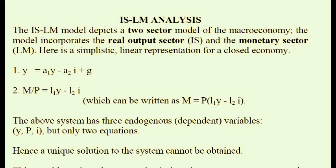The real output sector is usually represented by the national income accounting identity: Y equals C plus I plus G. This says that output produced on the left-hand side is distributed across three sectors — the consumption sector, the investment sector, and the government sector. Said differently, there are three main users of goods produced in the economy: the government, households, and firms.